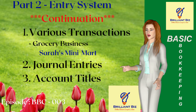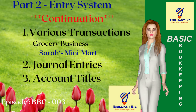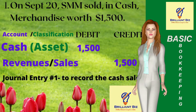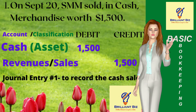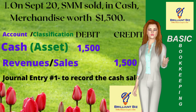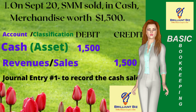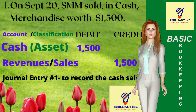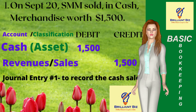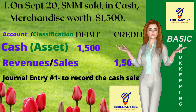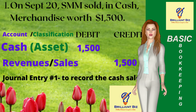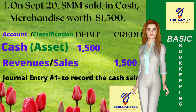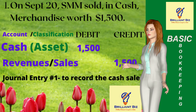Transaction 1: On September 20, SMM sold in cash merchandise worth $1,500 in total. The first entry is to record the sale of merchandise in cash: debit cash of $1,500 for the money received from customers, and credit sales revenues of $1,500 for the selling price.